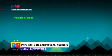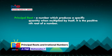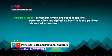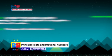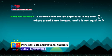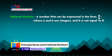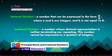Here are the terms that we need to remember. The principal root is a number which produces a specific quantity when multiplied by itself — it is the positive nth root of a number. A perfect square is the square of a rational number. A rational number is a number that can be expressed in the form A over B, where A and B are integers and B is not equal to 0. An irrational number is a number whose decimal representation is neither terminating nor repeating, and it cannot be expressed as a quotient of integers.